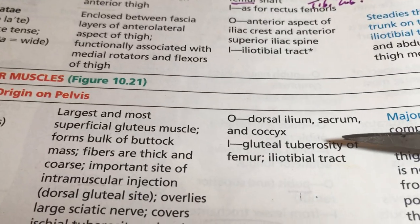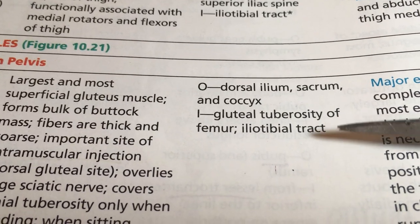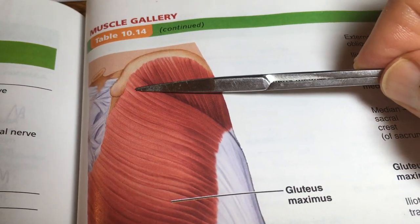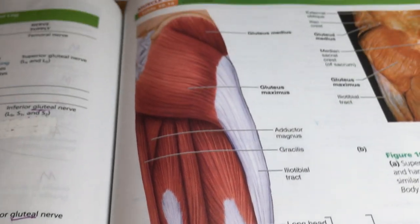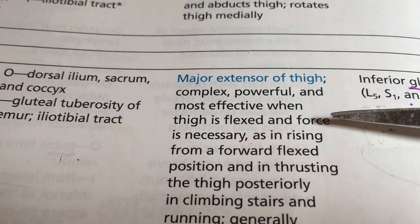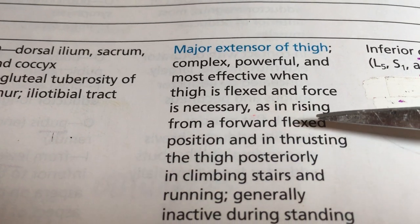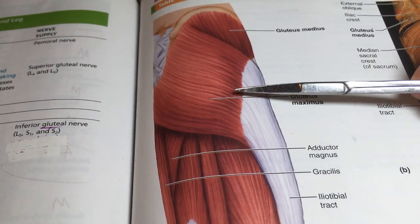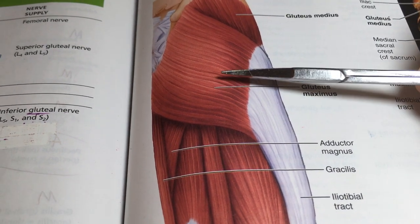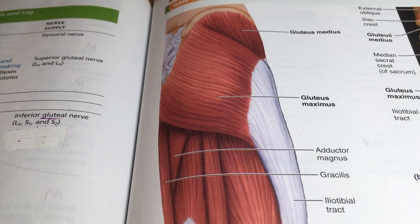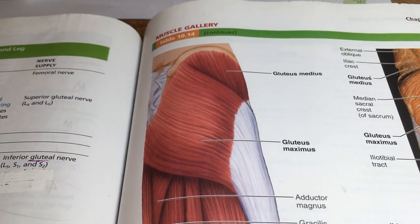The origins of gluteus maximus are the dorsal ilium, sacrum, and a lot of coccyx. It connects via the gluteal tuberosity and the iliotibial band down to the tibia. It is the major extensor of the thigh, and it's important in the complexity of moving from uniaxial to biaxial stance — critical in ballet, dance, gymnastics, tai chi, martial arts, and yoga standing postures.